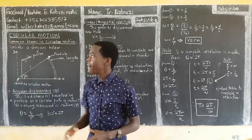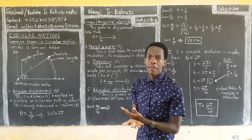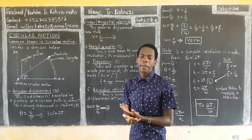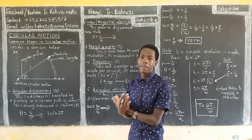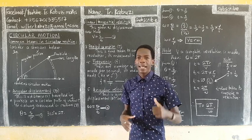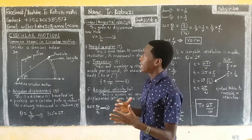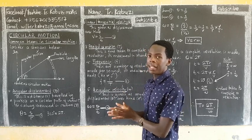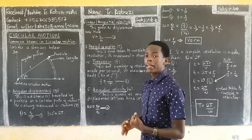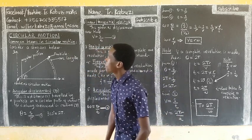Since we've seen the first lesson where we saw a different derivation of angular speed — the relationship between linear velocity and angular velocity — we are now going to use this lesson to see the common definitions in circular motion, and then I'll show you another method of finding the relationship between angular velocity and linear velocity.